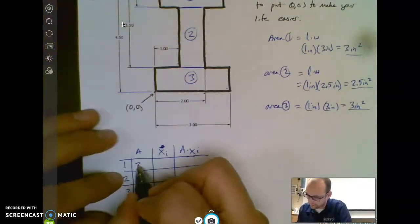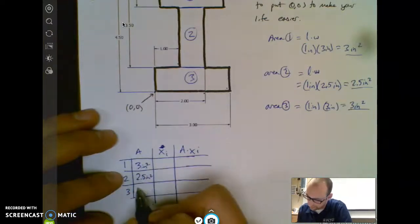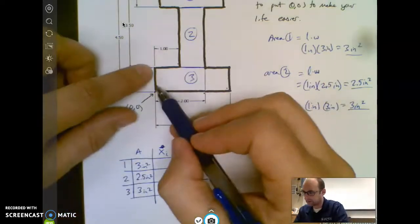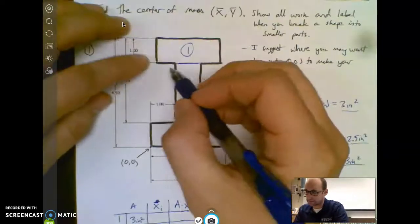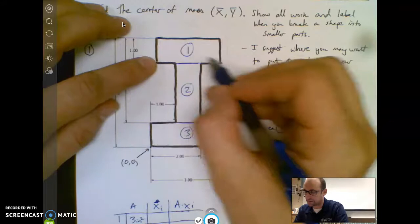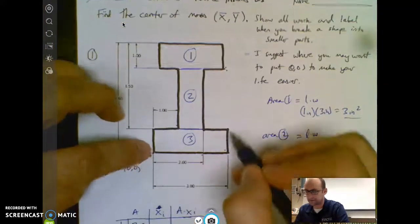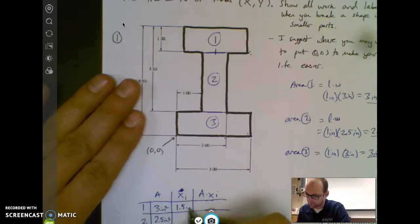So let's try this. We've got our areas 3, 2.5, and 3. Now my X bar on shape 1 is the center. Remember, if it's a rectangle, you want the horizontal distance, which is half the whole distance. So if the whole distance is 3 from my 0, 0, then the middle of that is 1.5. So we'll say 1.5 inches.